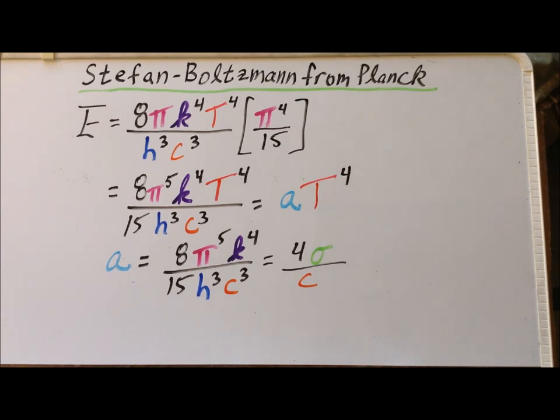This constant a is sometimes written as 4σ divided by c, where this σ is the Stefan-Boltzmann constant. Using the relationship, we can solve for σ. Solving, we get that σ is equal to 2π to the fifth k to the fourth divided by 15 times c squared times h cubed.